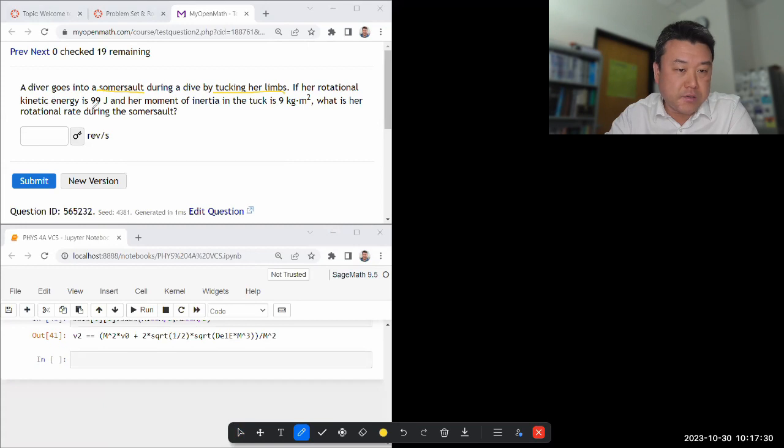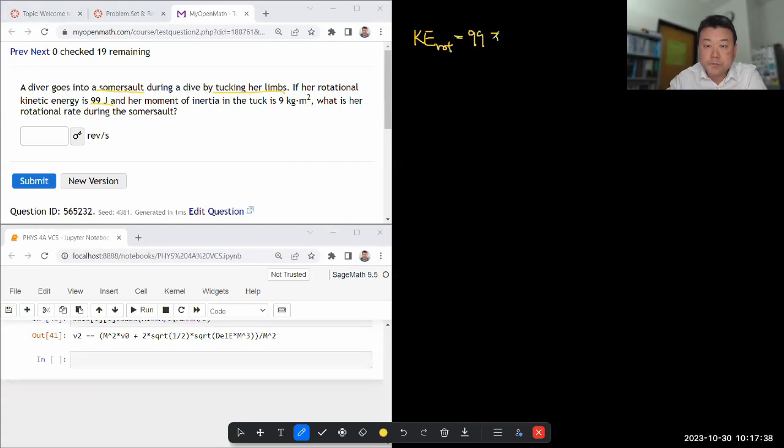If her rotational kinetic energy is, okay, let me just give that a symbol. She has some rotational kinetic energy, 99 joules. And her moment of inertia in the tuck is, so after she's tucked herself, the rotational inertia is 9, and I think that is the correct unit for rotational inertia, mass times distance squared. What is her rotational rate during the somersault?